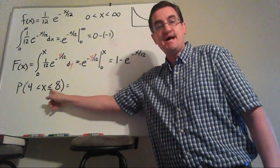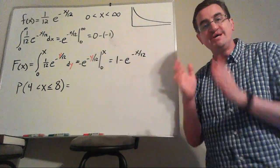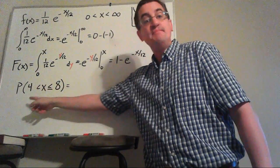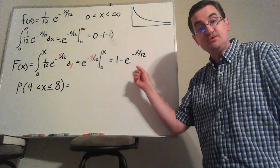First off, this equal sign doesn't actually matter. There's no area for an exact probability. So you can ignore that part. I'm going to plug in the 4 and the 8 into this equation.